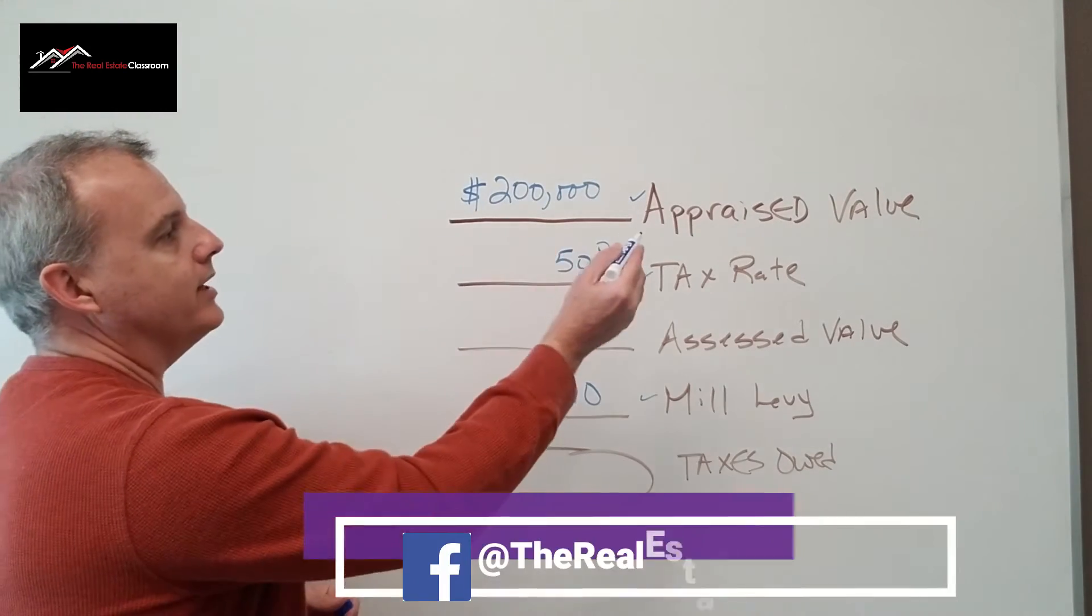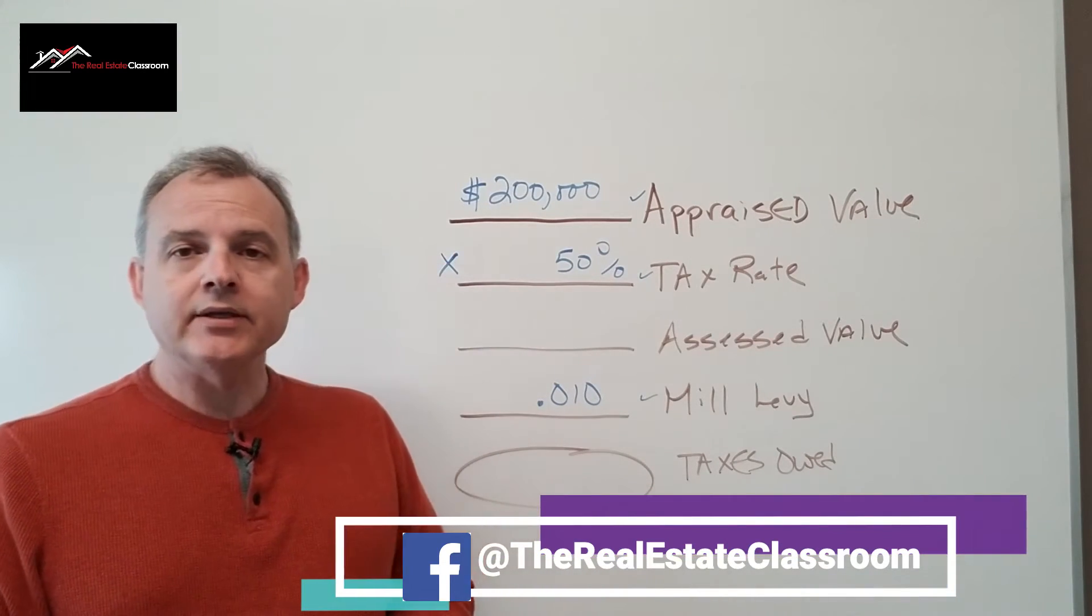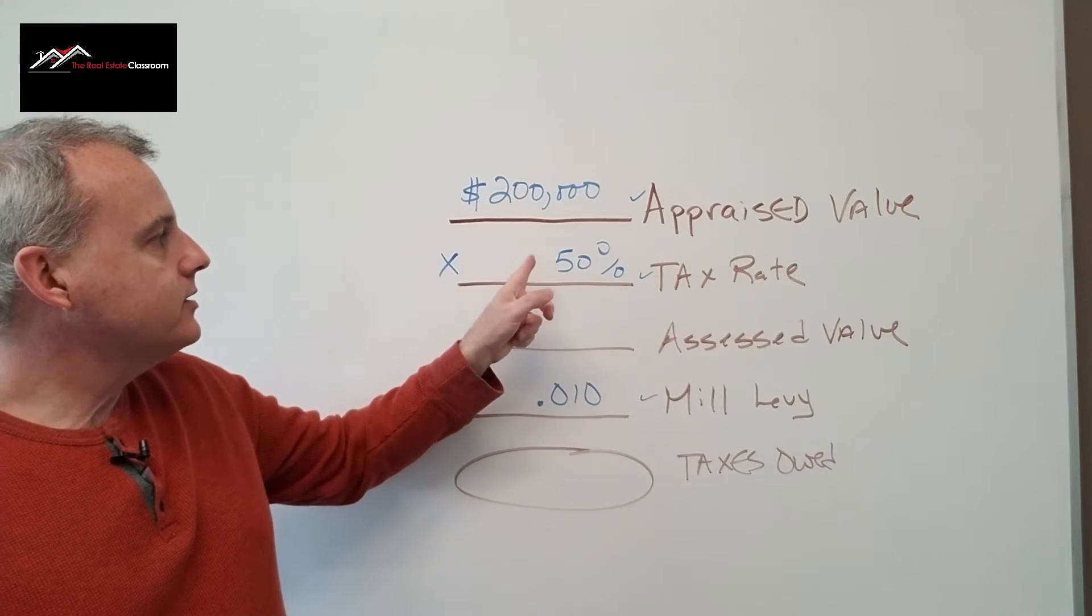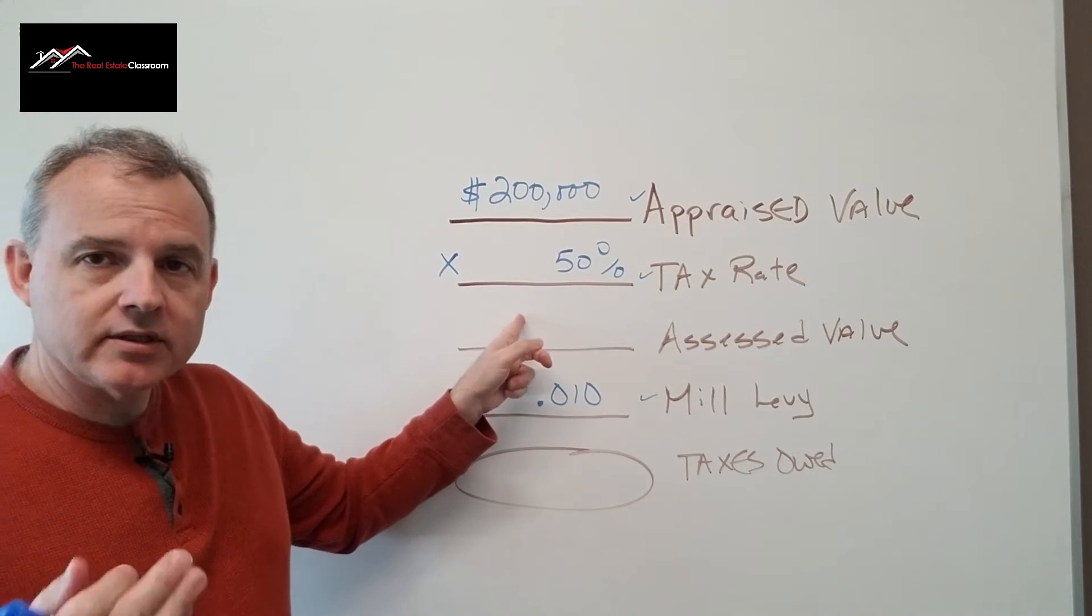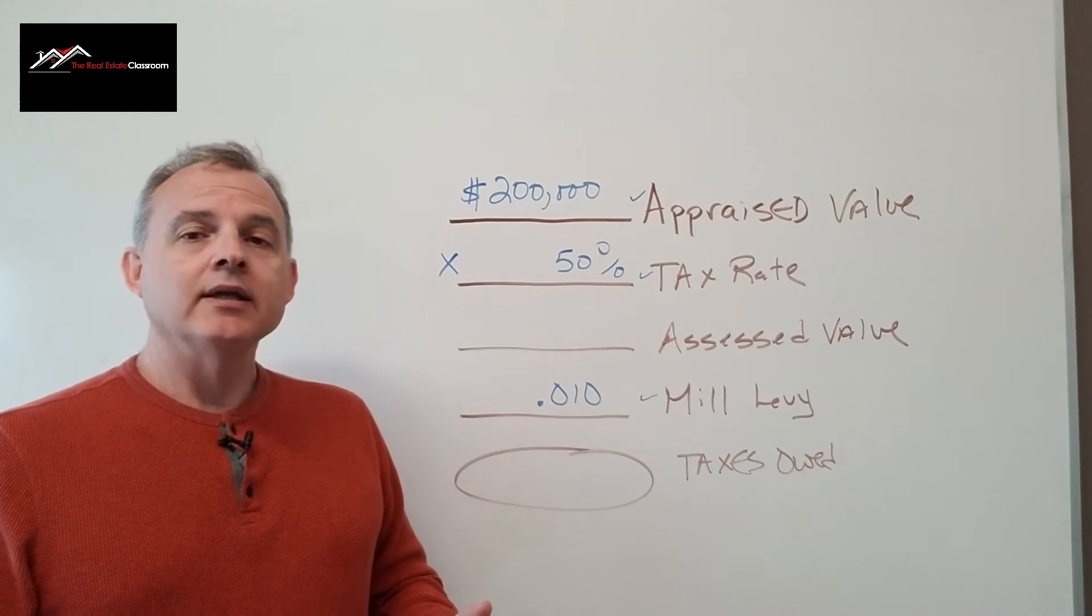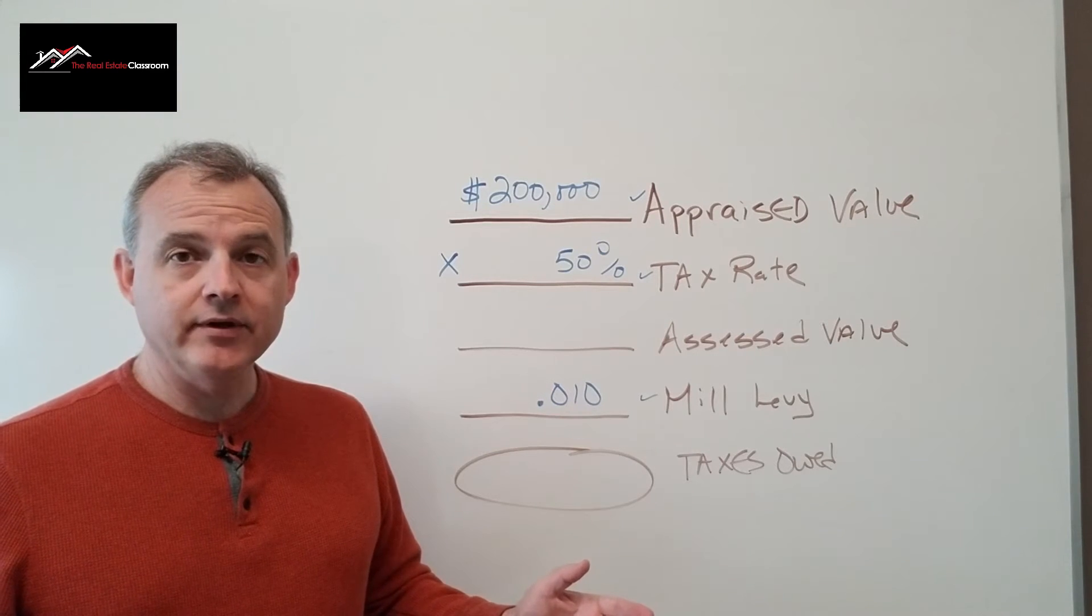We take the appraised value and multiply it by 50% to get our assessed value. So $200,000 times 50% equals our assessed value. There are two ways to go about this. You can take $200,000, type in 50, and hit the percent key on your calculator.